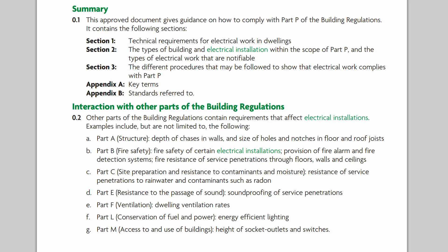Although this document is about electrical installations, it's almost inevitable that other parts of the building regulations will also have to be taken into account. For example, Part A covers the structure of the building — if you're making channels in walls or cutting holes in joists, they have to be in the correct places and of a certain size. Fire safety is also relevant where you're drilling holes through walls and ceilings. Other parts cover things like energy-efficient lighting, and the height of socket outlets and switches.